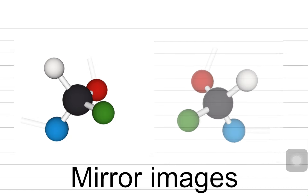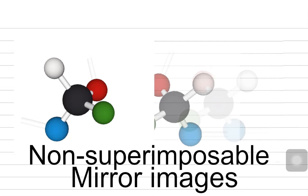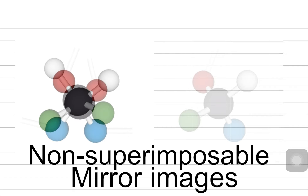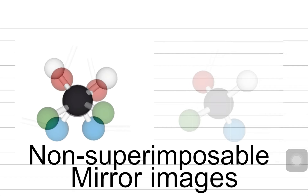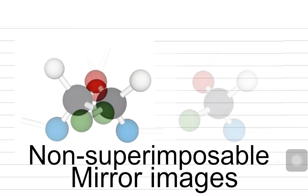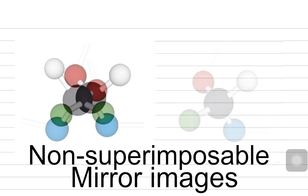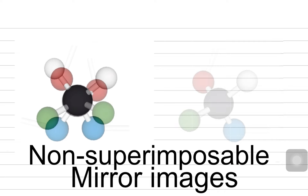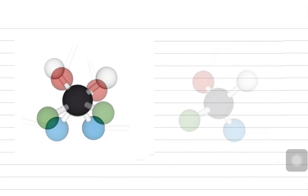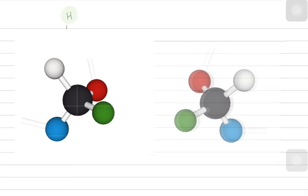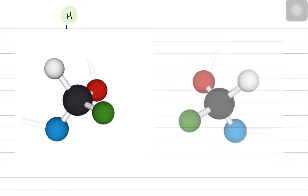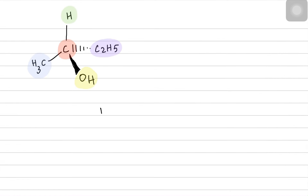If I try to superimpose one structure on the other, it's impossible. Look again — they are mirror images of each other, but they are non-superimposable mirror images. And that is why they are called chiral carbon optical isomers.